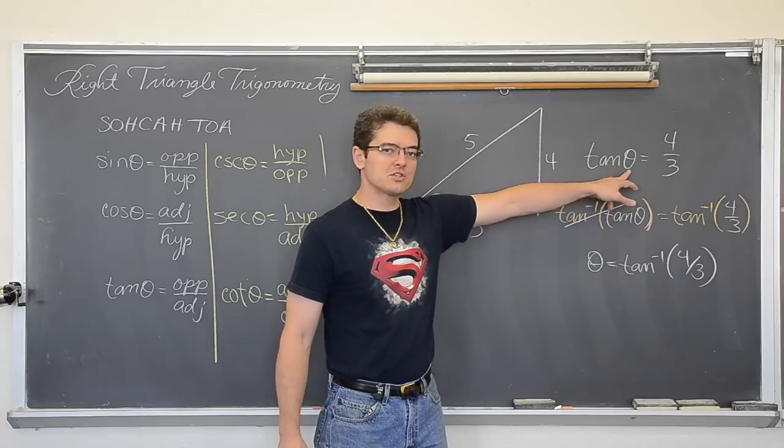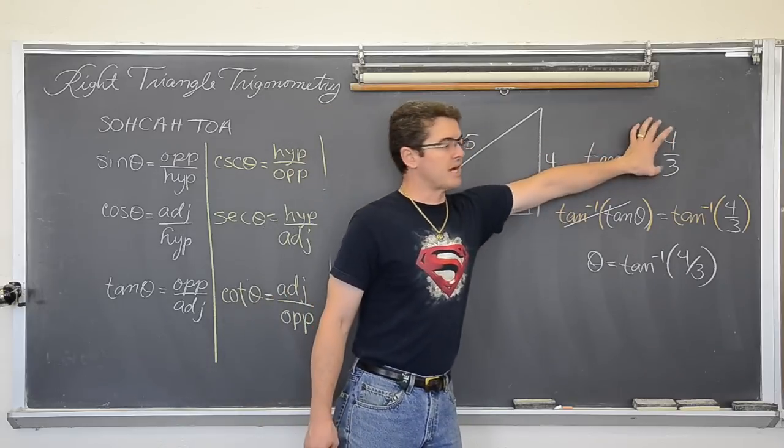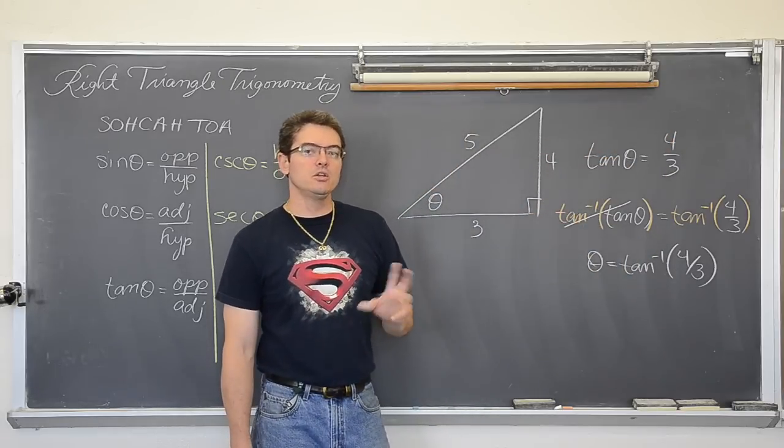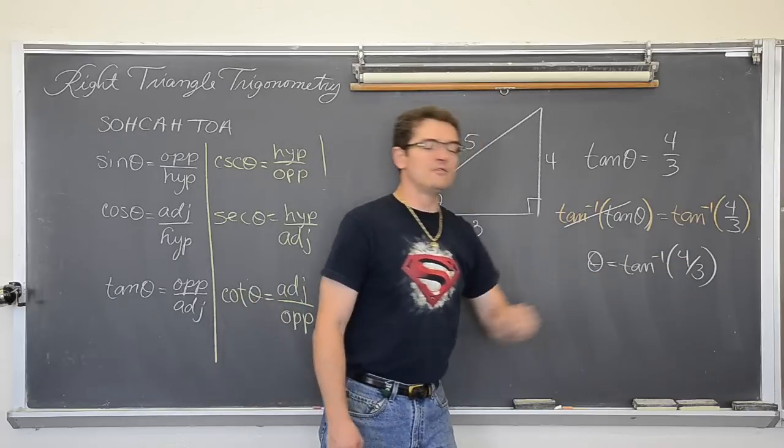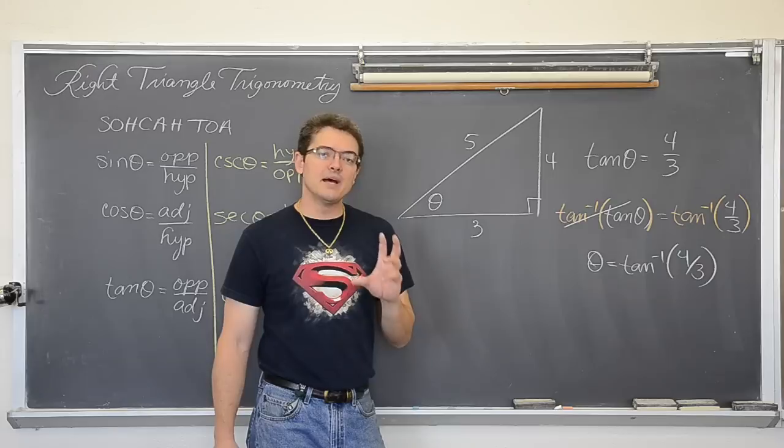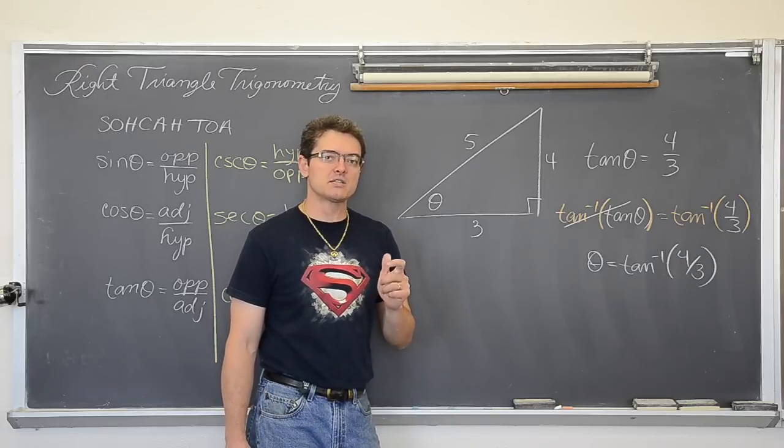What do you put into a trig function? An angle measure and you get out, as we can see, the sides of a triangle. With an inverse trig function, you are putting in the sides of the triangle. Even if it is just a decimal like 1.3 repeating, that decimal does come from the ratio or the division of two sides of a right triangle.